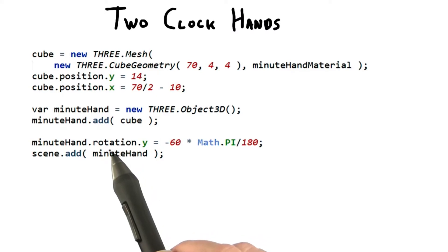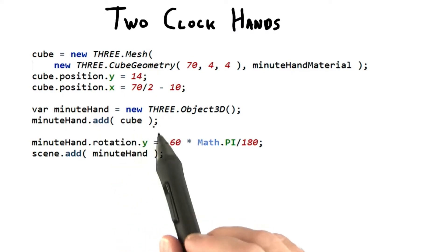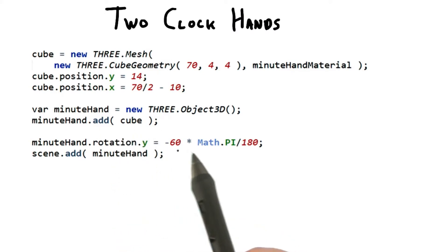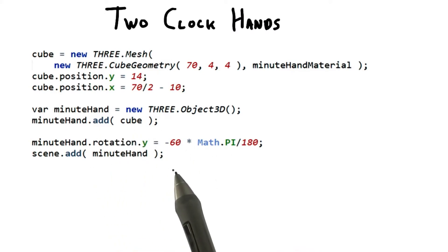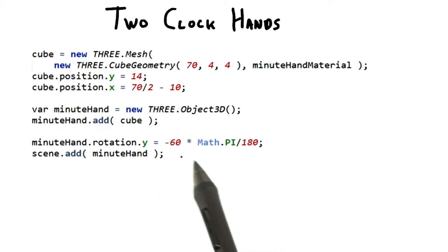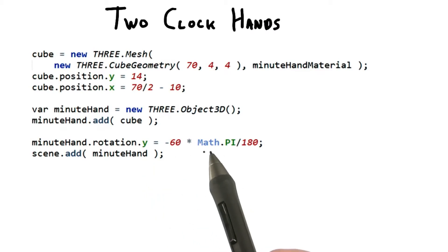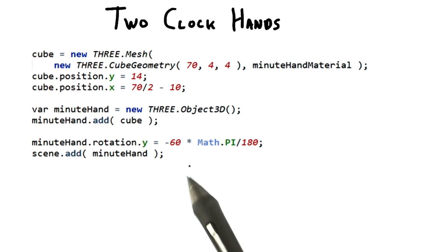A minute hand is then added and then rotated into place. This new object is then added to the scene. It's this minute hand object that undergoes the rotation and gives us what we want. Similar code is added for the hour hand.